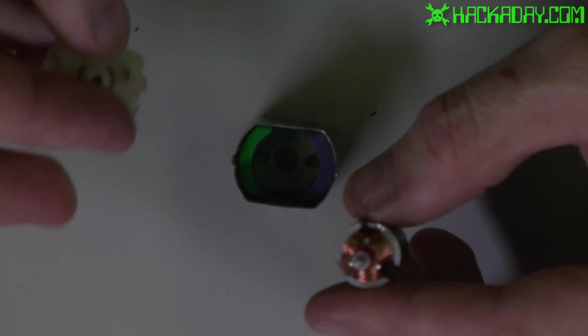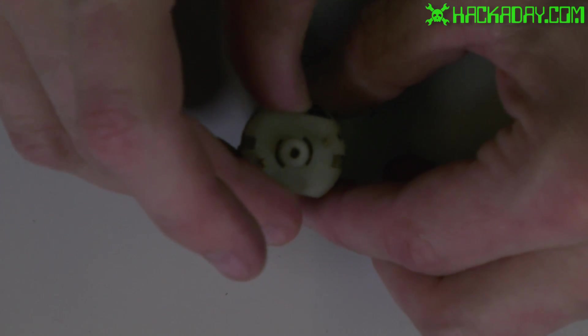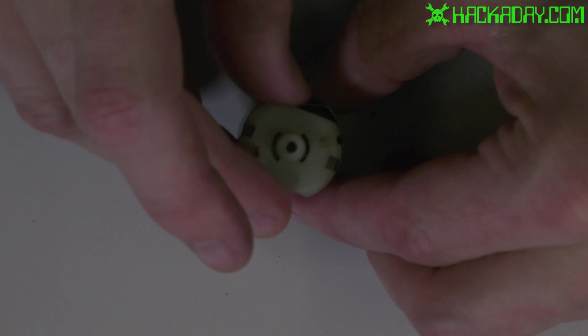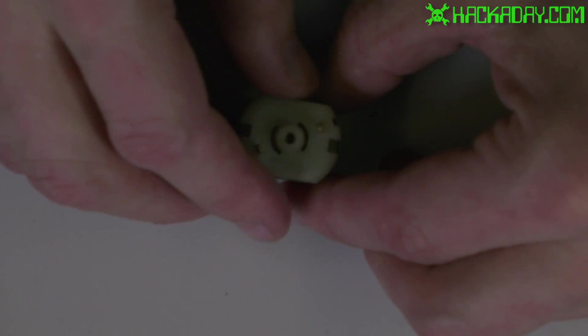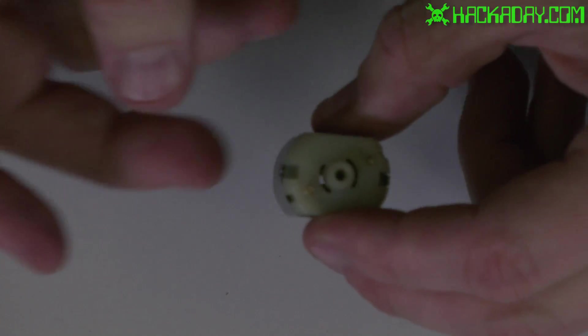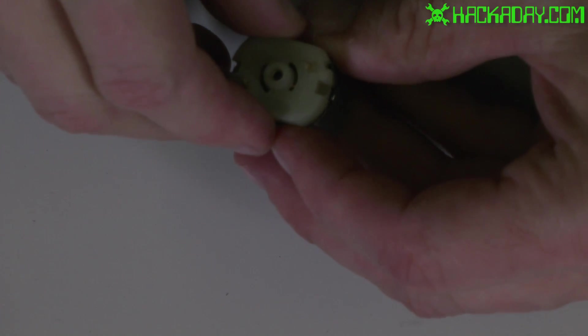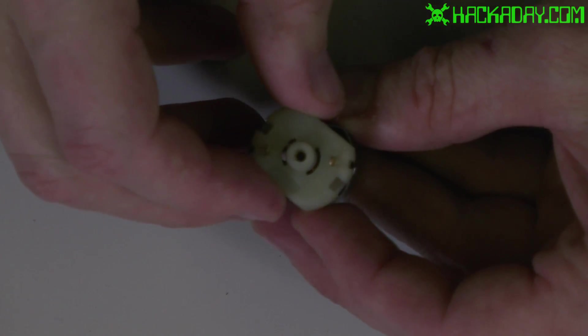In more expensive motors what you'll find is you'll have the ability to adjust the angle that the brushes contact the commutator and by doing that you can change the speed and torque of the motor.